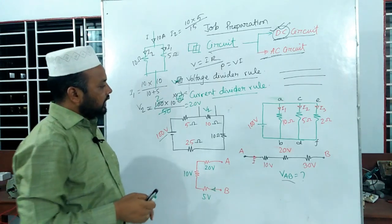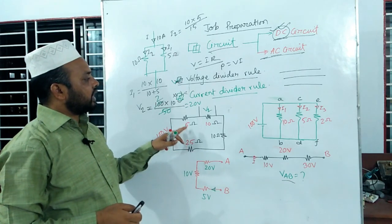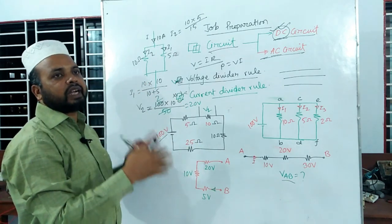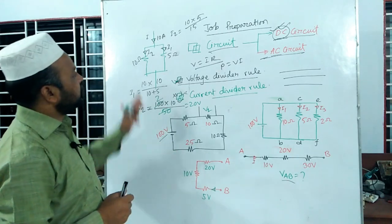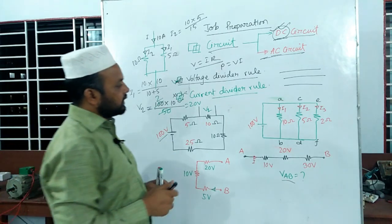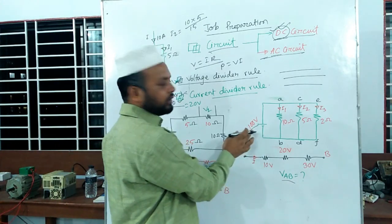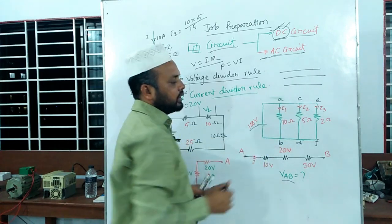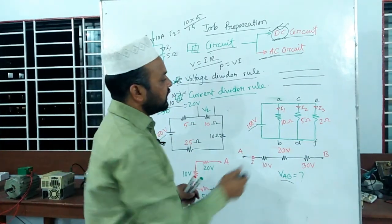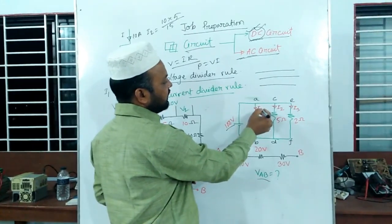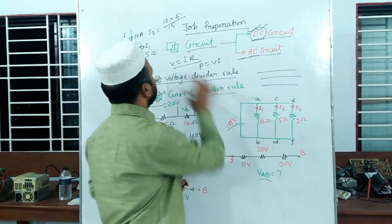This is the current divider rule. We should have a current divided by some current circuit. We see the circuit at 100 volts. This is a parallel circuit. We know that the circuit series is parallel. If parallel has a current I1, then the total resistance and voltage follow the current divider rule.